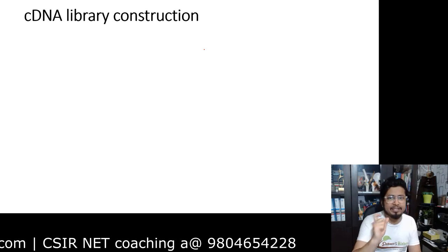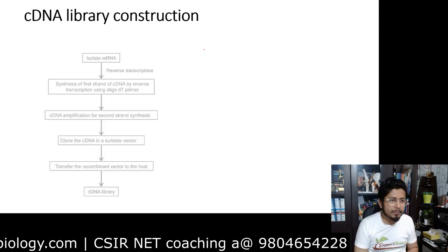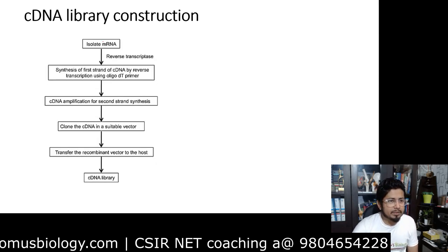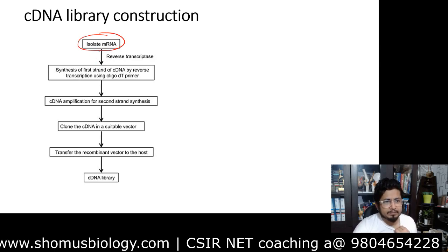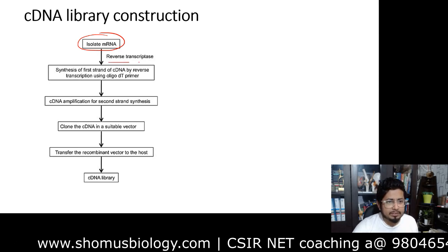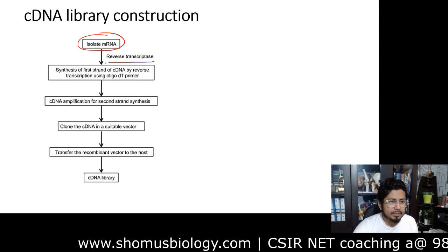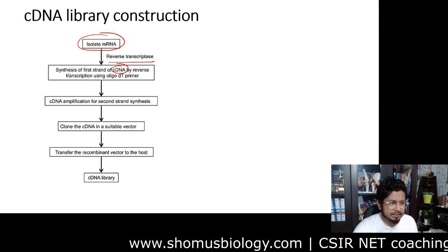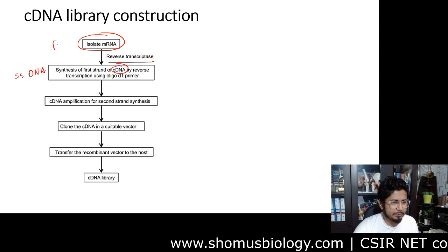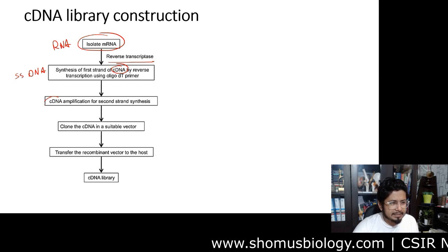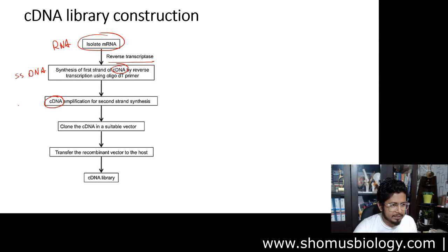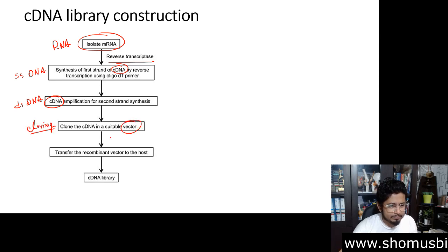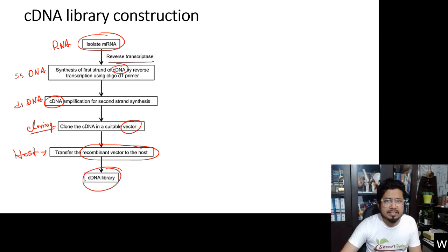A cDNA library is a complementary DNA library — a repository of all the coding region genes of eukaryotes. To construct it, first we isolate mRNA. After isolation of mRNA, reverse transcription is performed using reverse transcriptase, and single-stranded cDNA is formed. Then cDNA amplification is done — using one strand of DNA to make a second strand, producing double-stranded DNA. Then this dsDNA is cloned inside a vector, the recombinant vector is transferred to the host, and that is how the cDNA library is created.